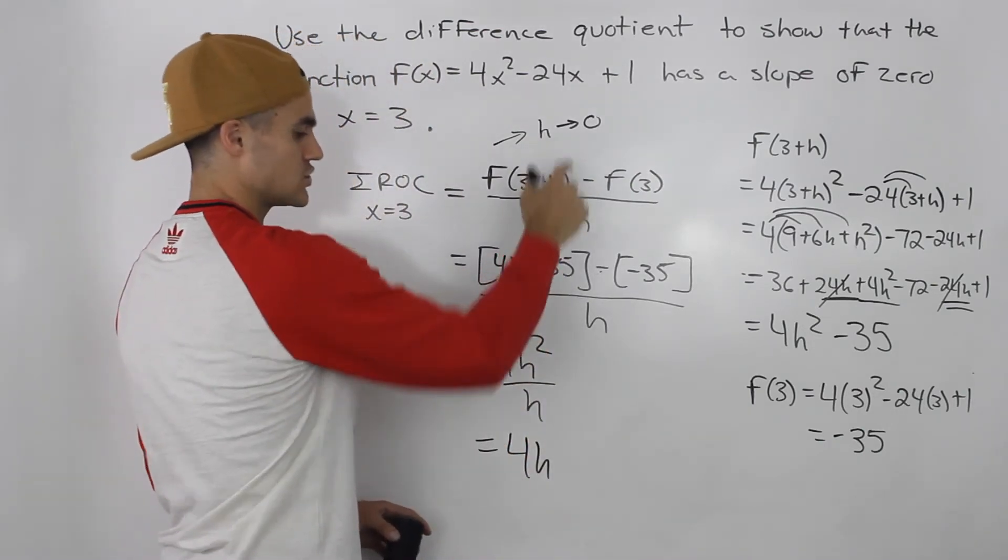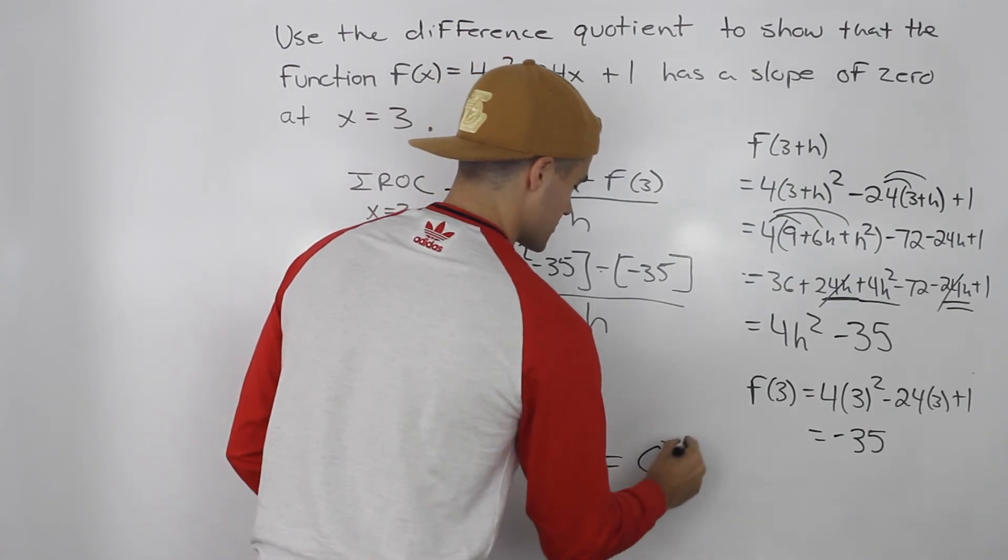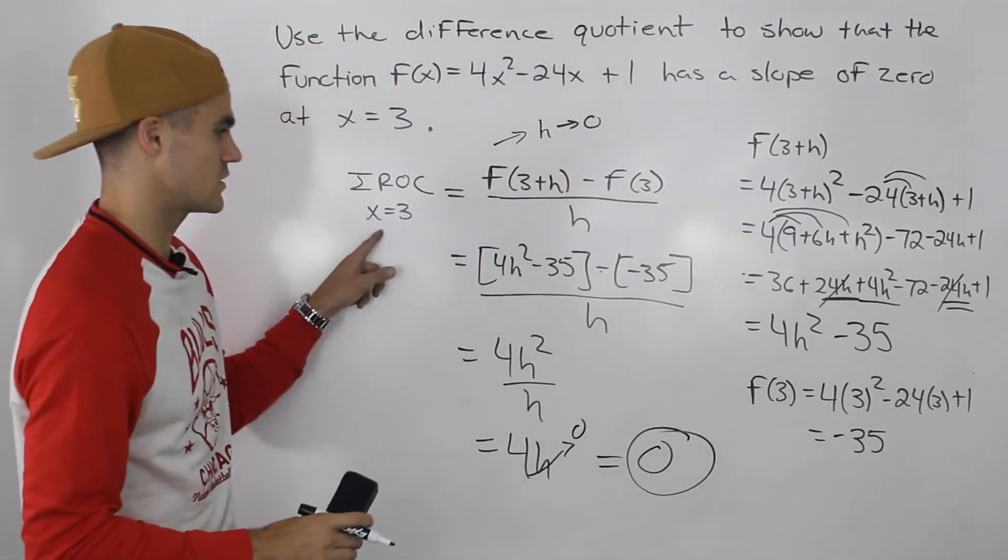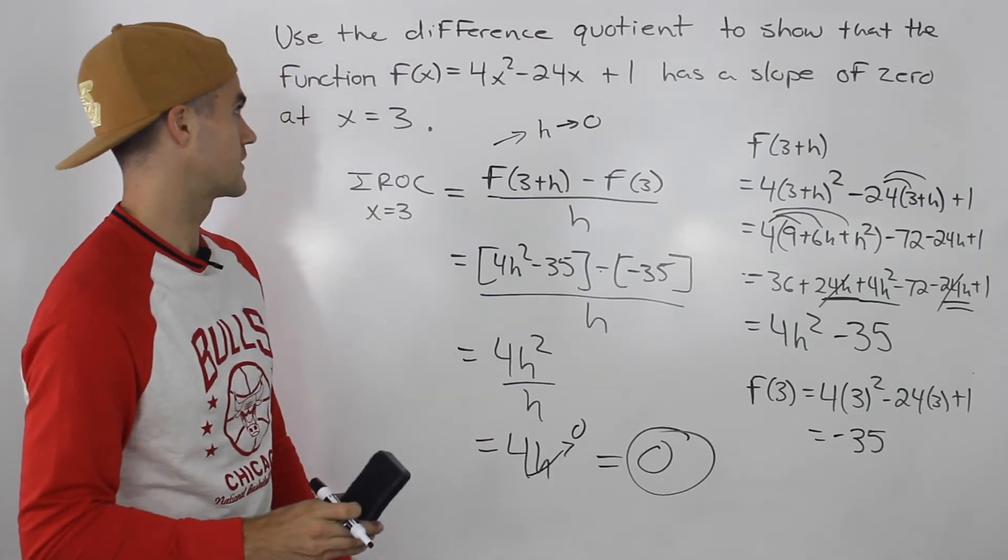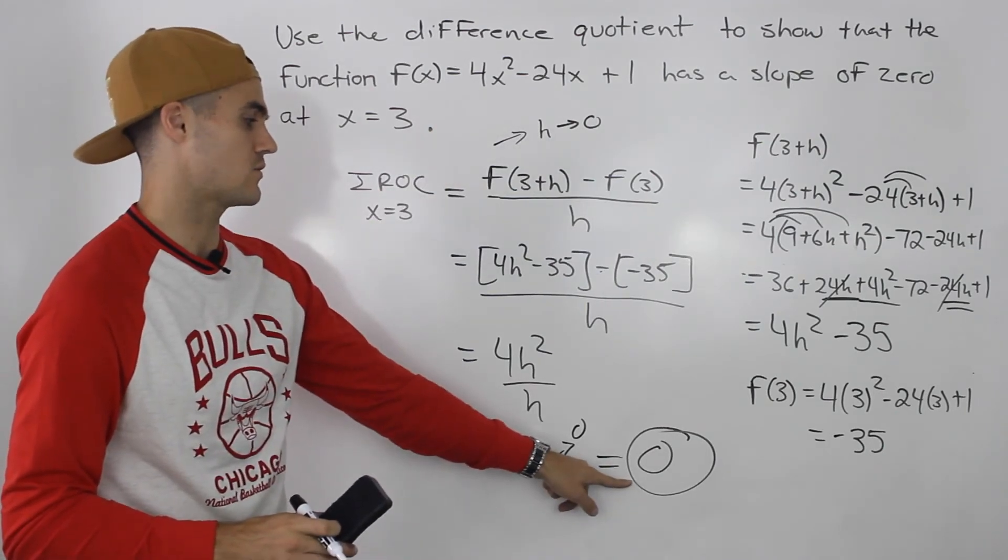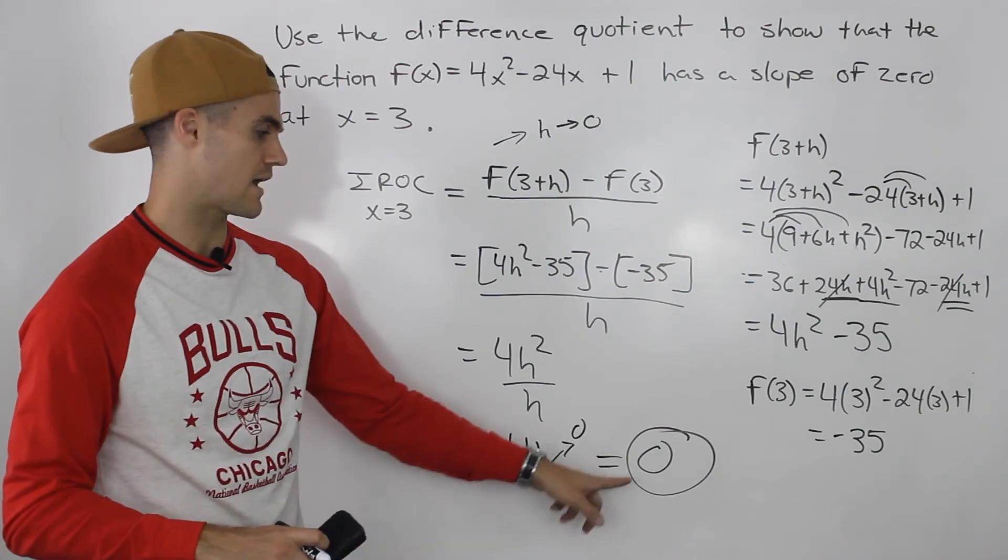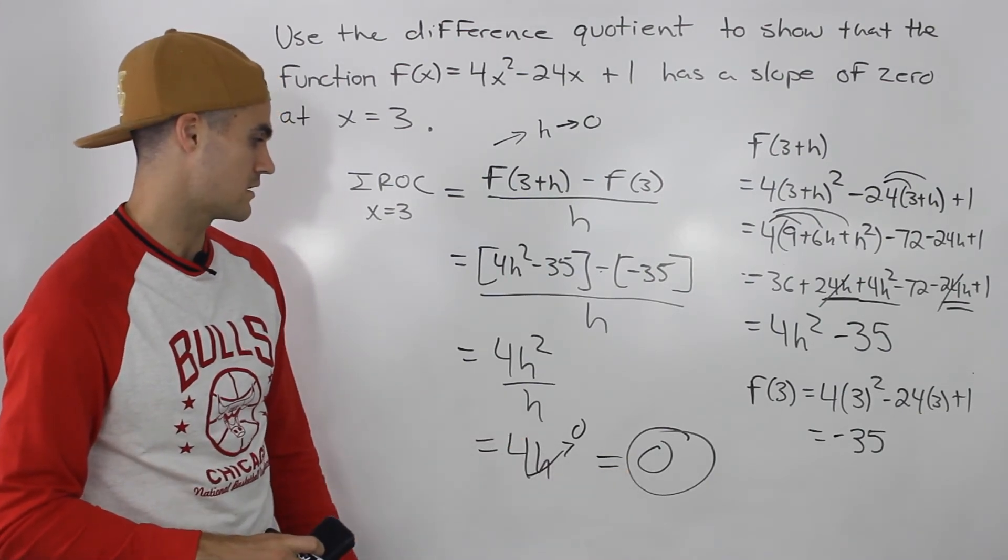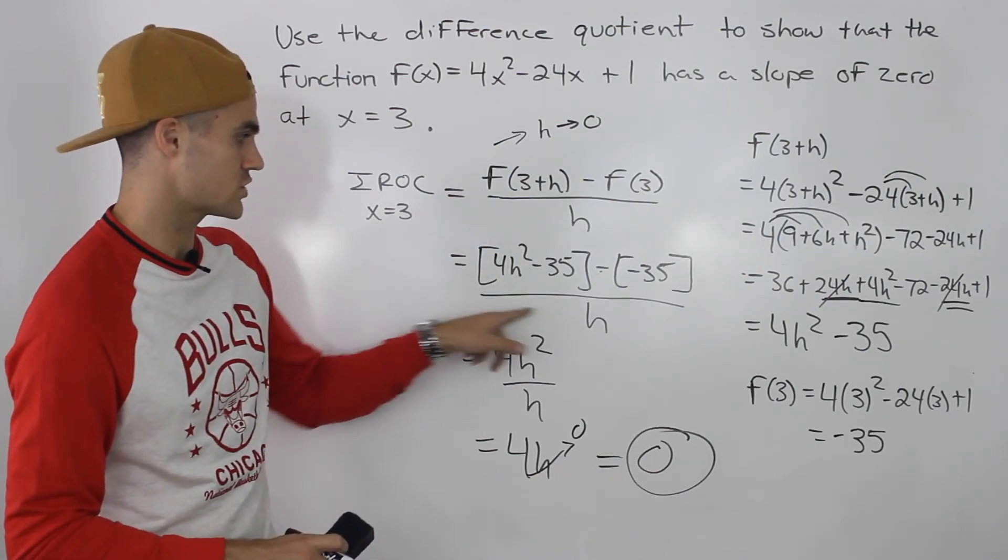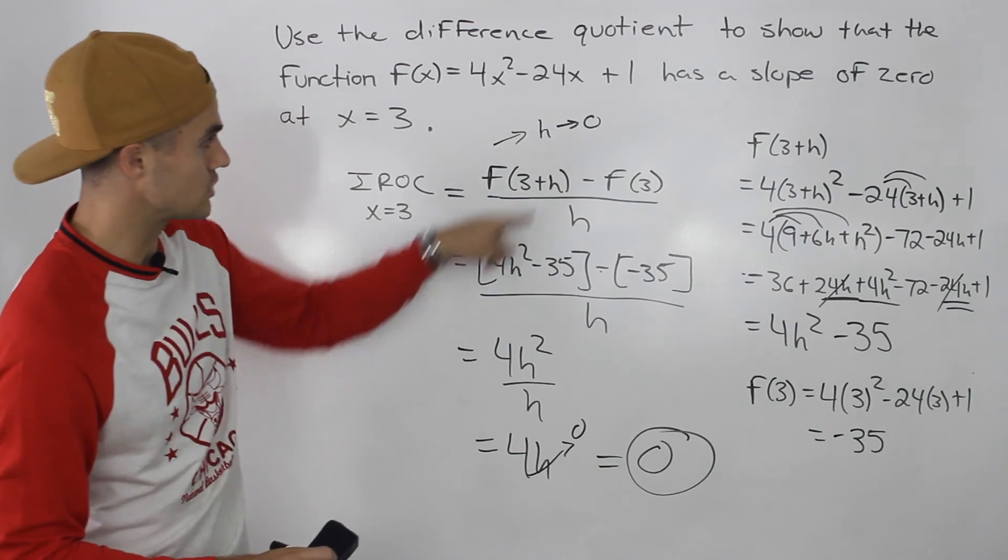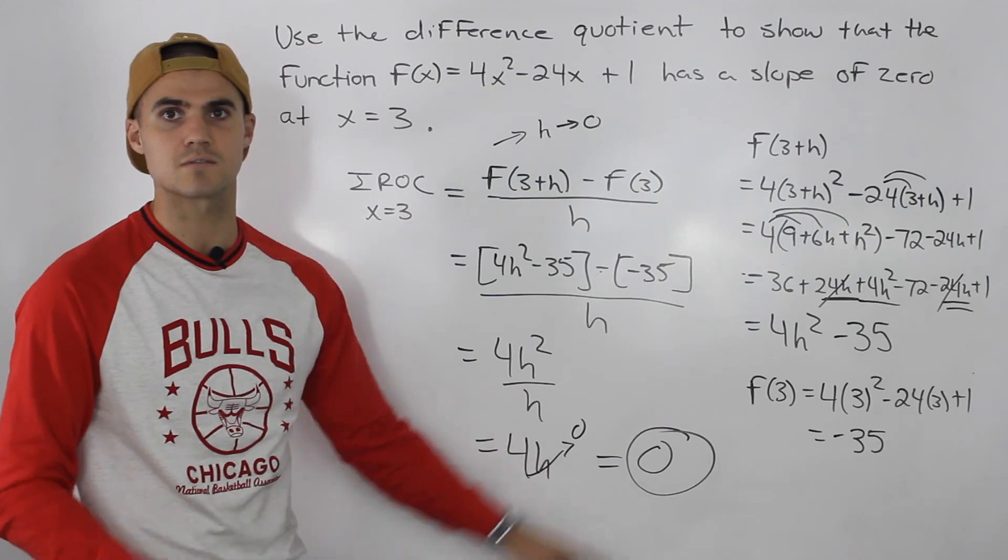And when h goes close to 0, this whole expression would go to 0. Meaning that the instantaneous rate of change at that x value of 3 is 0. Meaning the slope of the tangent at that x value of 3 for this function is 0. And we just proved it using the difference quotient. So that is your final answer there. You've got to algebraically simplify the difference quotient and get rid of that h in the denominator. Then you could plug in 0 for h, and the whole instantaneous rate of change, the slope of the tangent ends up being 0 there.